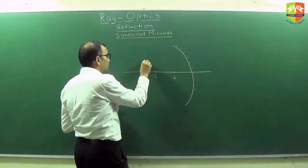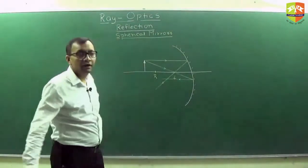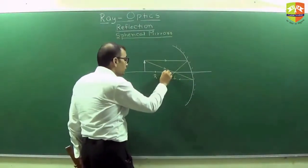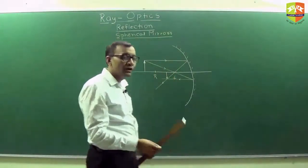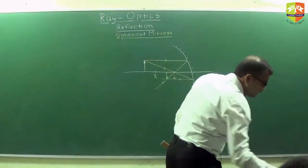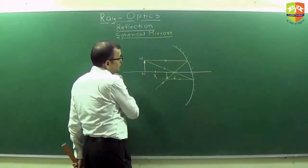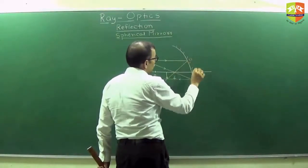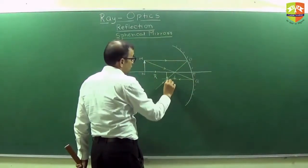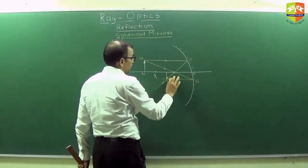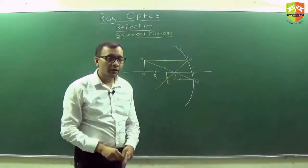Now here is the object. Draw its ray diagram — this is a ray diagram. You will see that the image will lie over here. Now use the naming convention of the points: let us say this is M, this is N, this is O, this is P, this is Q, this is R. This one was F. So this is the naming convention.